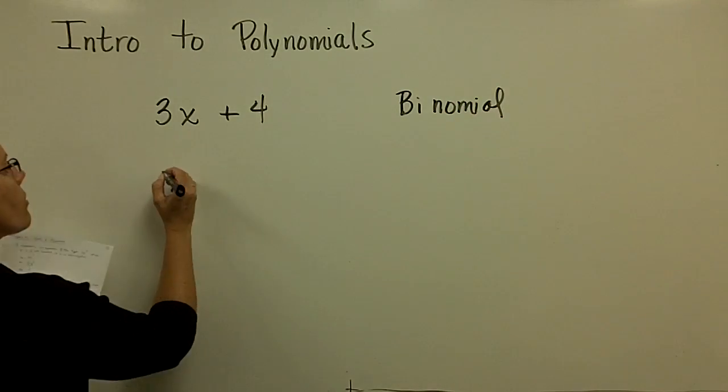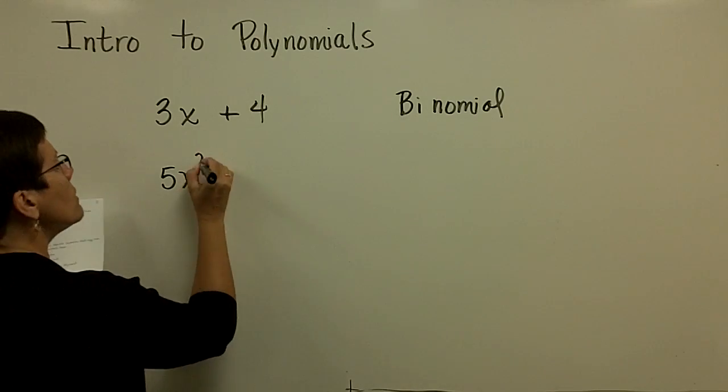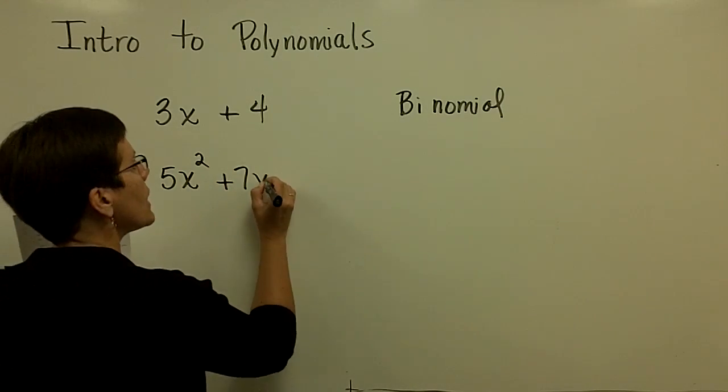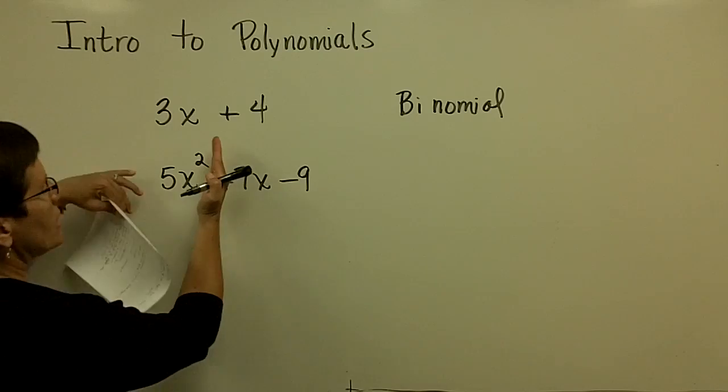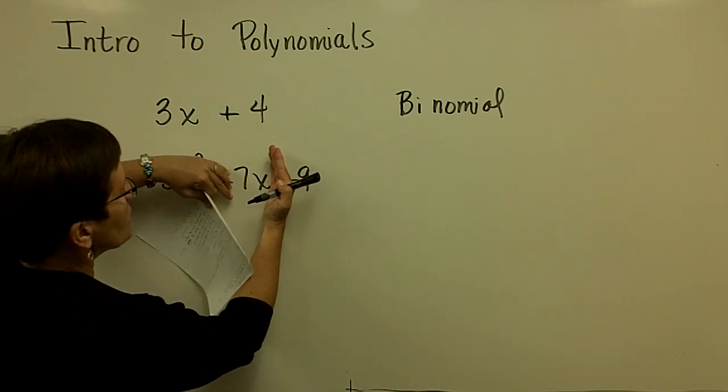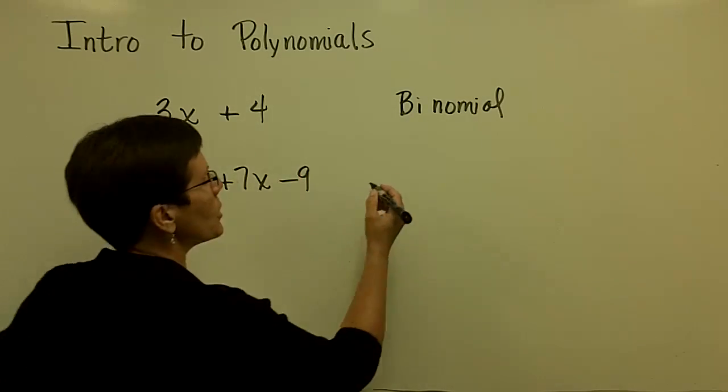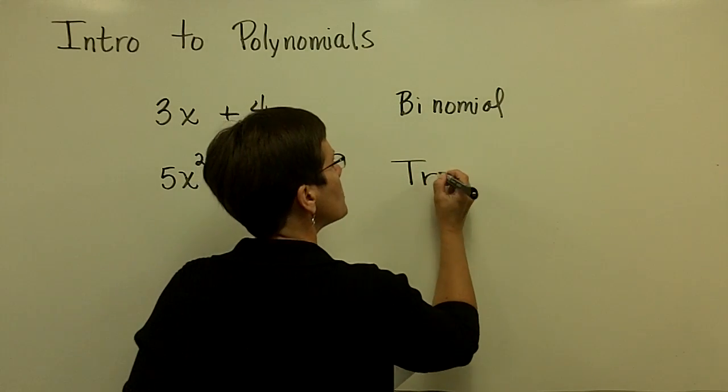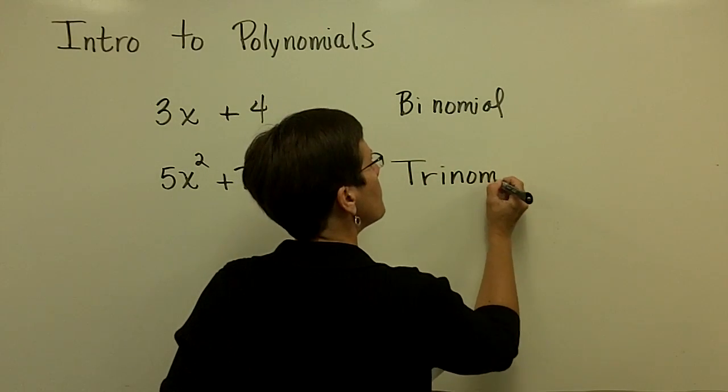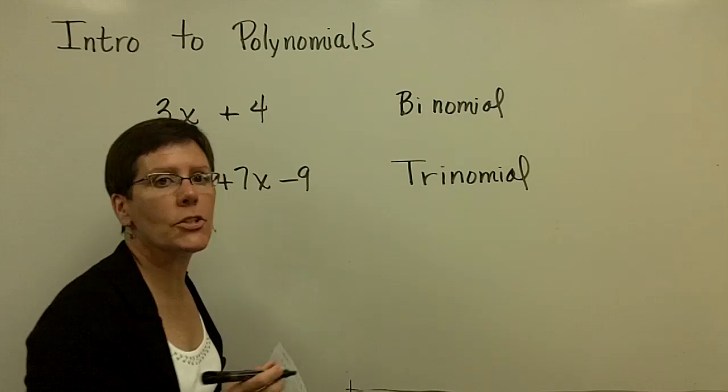If we put three terms in a polynomial, 5x² + 7x - 9. Here's a term. Here's a term. And there's a term. We often call that one a trinomial because it has three terms in it.